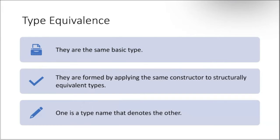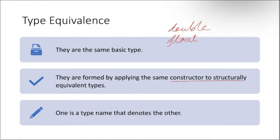Type equivalence: types can be considered equivalent if they are the same basic type. For example, double and float are quite equivalent — the only difference is the length. They can also be equivalent if they are formed by applying the same constructor to structurally equivalent types, or if one is a type name that denotes the other.